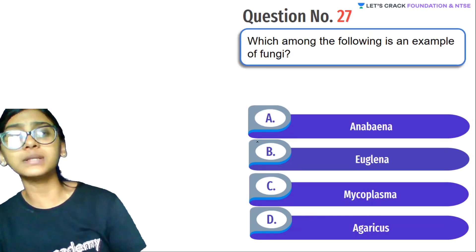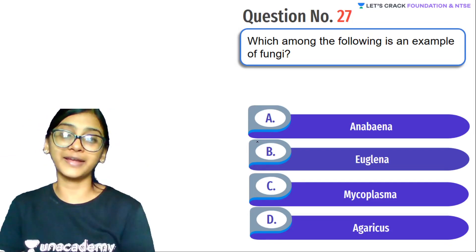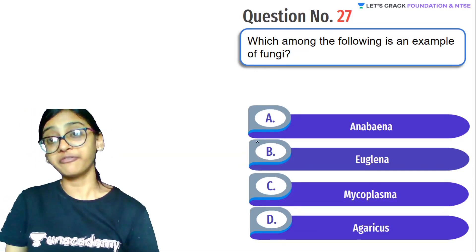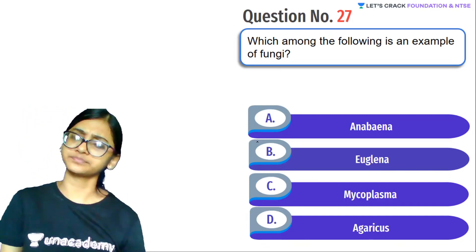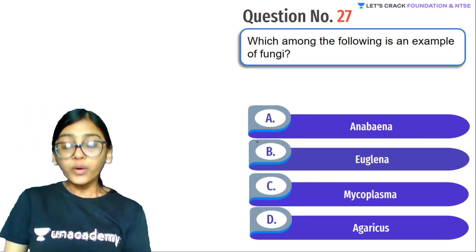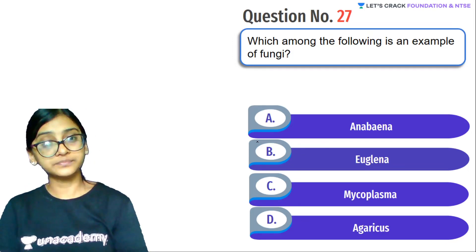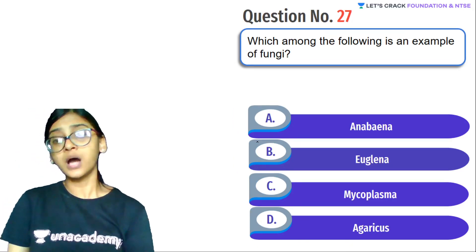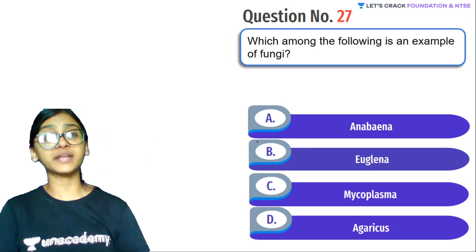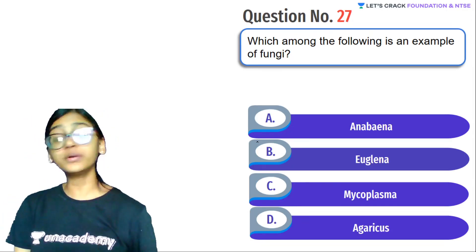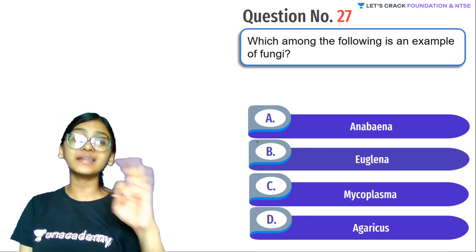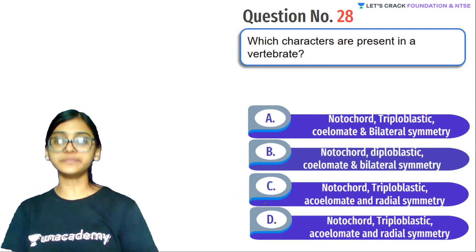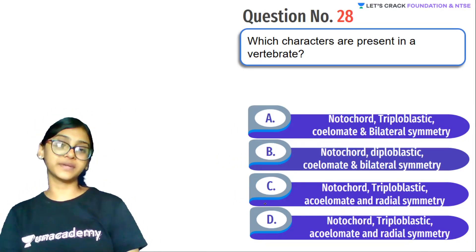Next question: Which among the following is an example of fungi? Options: Anabaena, Euglena, Mycoplasma, Agaricus. Anabaena is a bacteria. Euglena is a protist. Mycoplasma is the smallest living organism — it is a bacteria with no cell wall. Agaricus is a mushroom and belongs to fungi. So the answer is Agaricus.